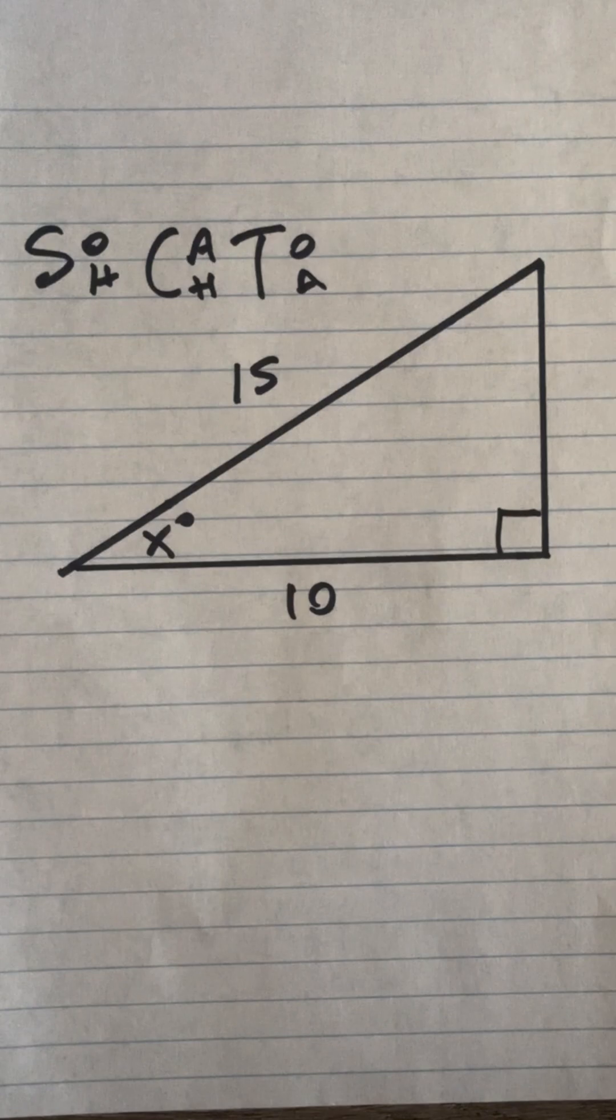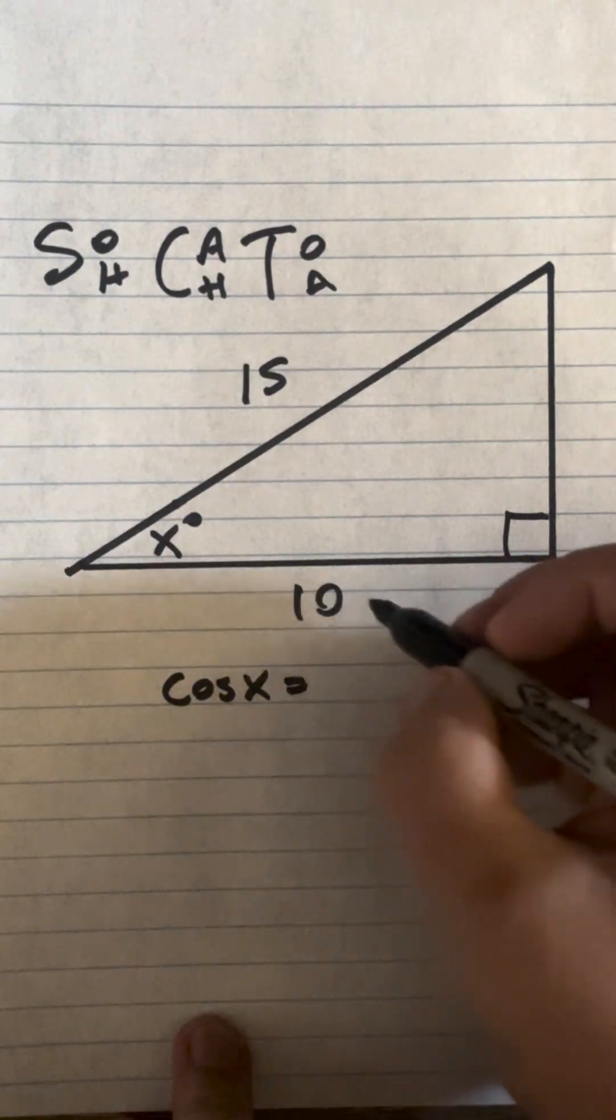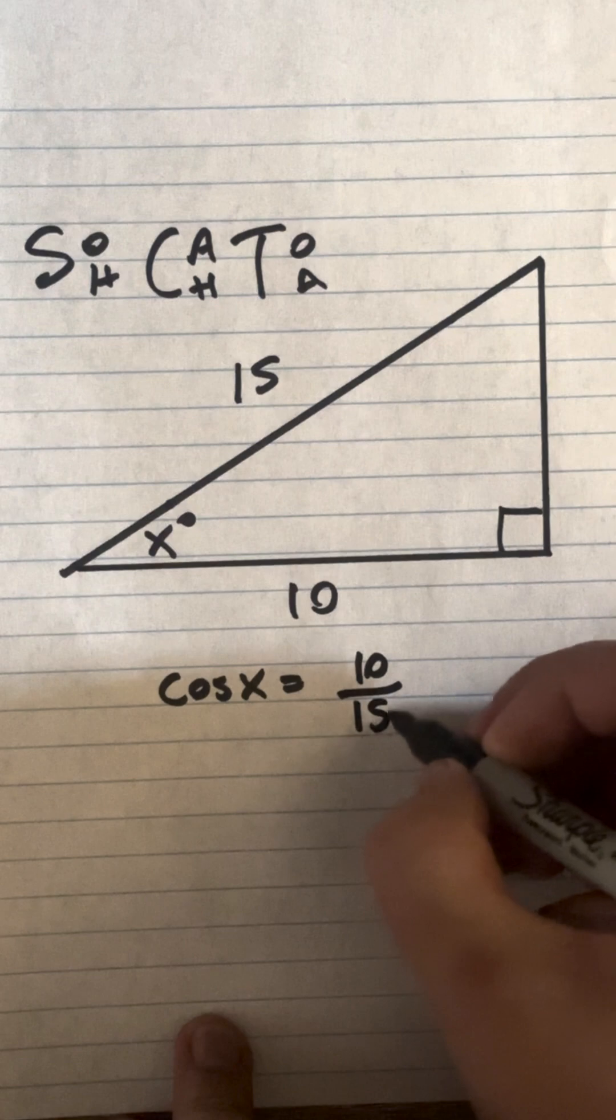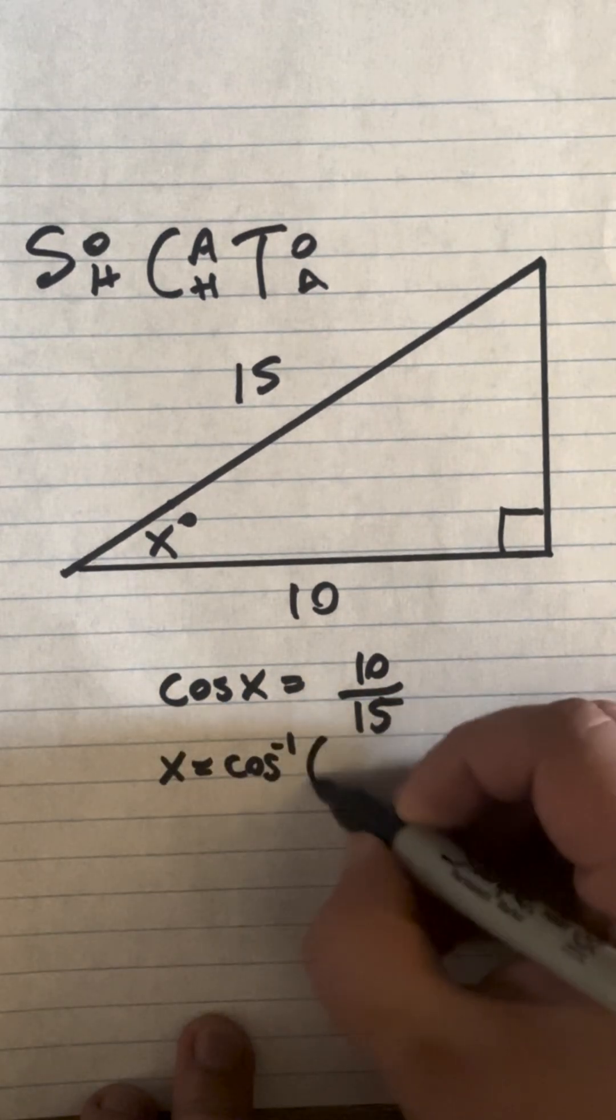So the way you write this out, it's going to be an inverse operation. Cosine x equals adjacent 10 over 15, the hypotenuse. And then this will come out as inverse operation of 10 to 15.